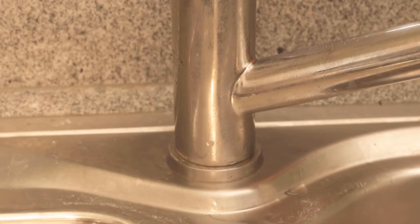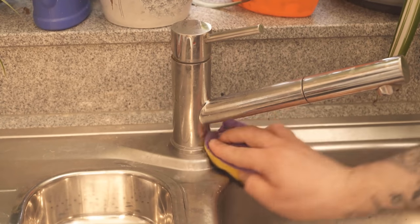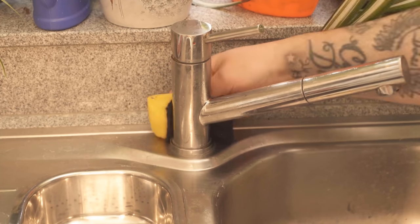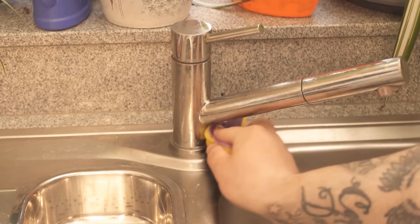After that you take the cloth away again and you can already see clearly that we have much less of our calcifications here. Because by this mixture of vinegar and the household cloth, which was pressed the whole time to it, the lime dissolves as if by itself.